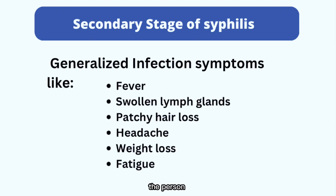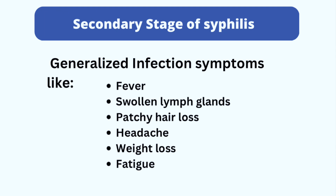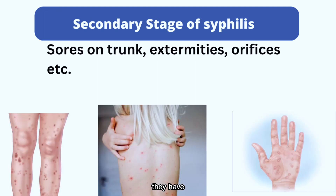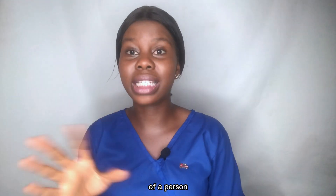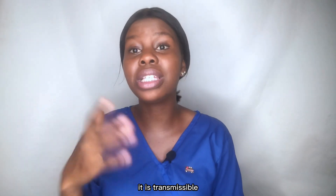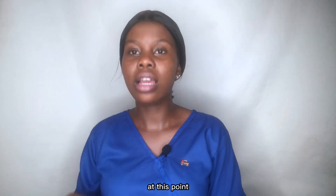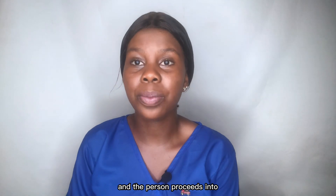In the secondary stage, the person begins to present with generalized infection symptoms such as the signs mentioned earlier, along with sores on the palms, feet, mouth, anus, vagina, trunk, and extremities. When you come in contact with the sores of a person in the secondary stage of syphilis, you can contract that infection — it is transmissible at this point. After a couple of weeks or months, the sores may resolve and the person proceeds to the period of latency.